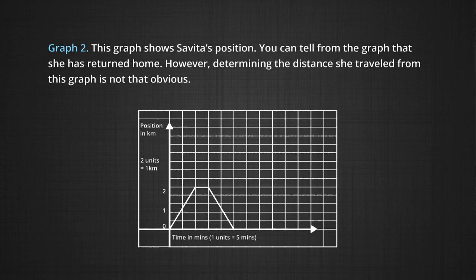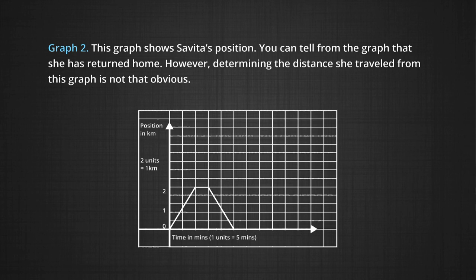Now let us look at the second graph — the position-time graph. Notice in this one again, the x and y axes seem to be the same. Starting from 0, she moves along and reaches a position of 2 kilometers in 10 minutes. 5 minutes she spent in school, and then she goes back home to pick up her physics copy. That journey is shown by another line, the slope of which is exactly negative of the first one. Notice the end of that line is also on the x-axis. The displacement, net displacement, is 0 for the girl — Savita went to school and came back home.